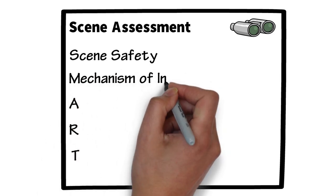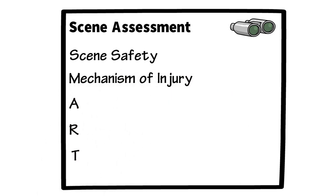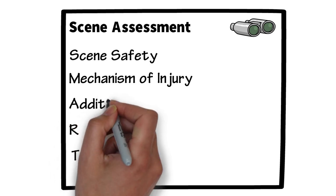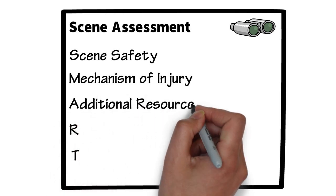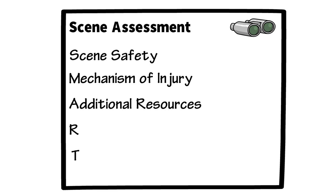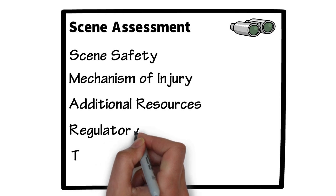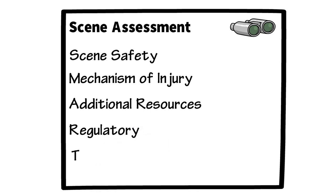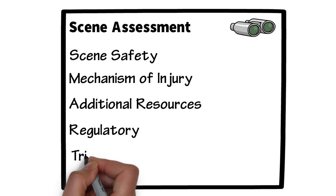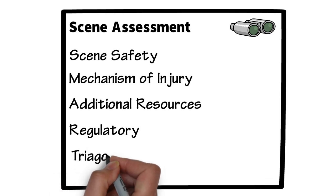For mechanism of injury, we need to include C-spine and catastrophic haemorrhage. You'll also need to look at additional resources — at this point you should request help in whatever form you deem necessary. Regulatory includes any DNARs, advanced directives, or recognition of life extinct situations that may be present, and triage — is this your only patient?